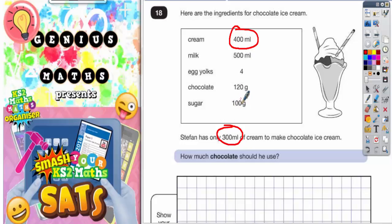Otherwise it will ruin your chocolate ice cream because all the ingredients need to be in the same proportion. So what we need to realize is that out of the possible 400 that he needs, he's only got 300. And if we work that out as a simplified fraction, this zero cancels out this zero, and this zero cancels out this zero.